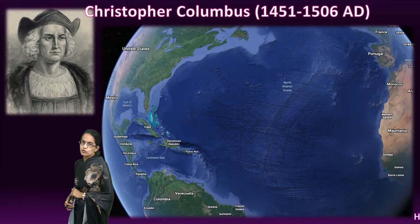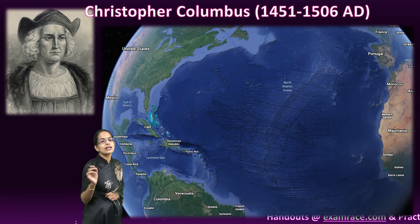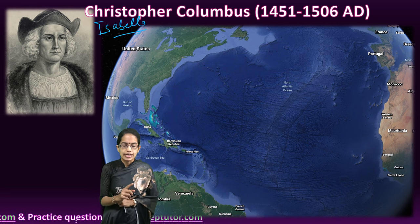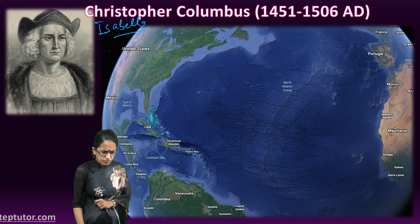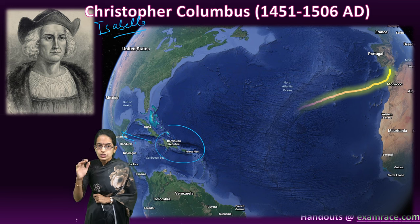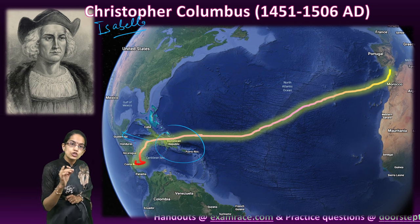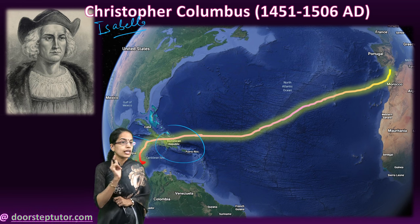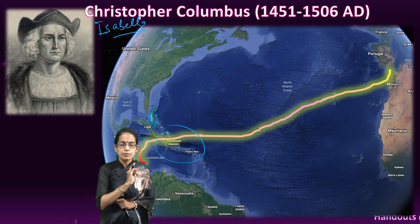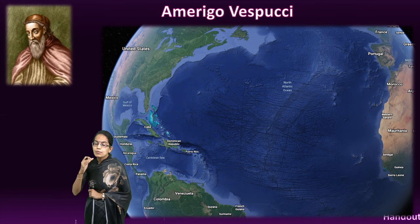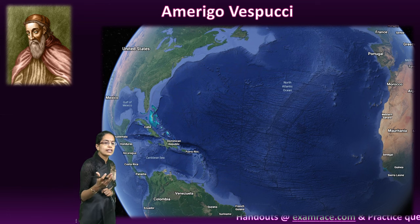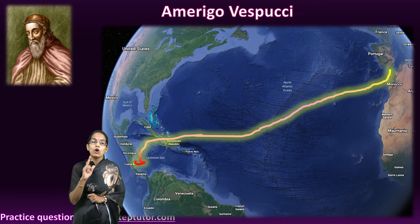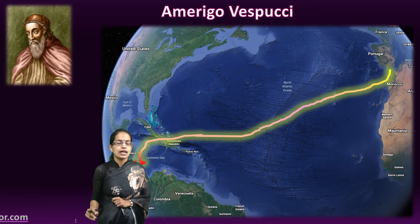The next important sailor is Christopher Columbus. Although he was an Italian sailor, he was sponsored by the Spanish queen Isabella. Christopher Columbus is known to have made four different trips to America — the first to the region of Cuba and later to the regions of America. Columbus identified and discovered this new continent, and upon seeing the people there, he named them Indians — 'Red Indians.' However, the name America was not given by Columbus; it is based on the name of Amerigo Vespucci, who followed the same route as Columbus and visited the same places.